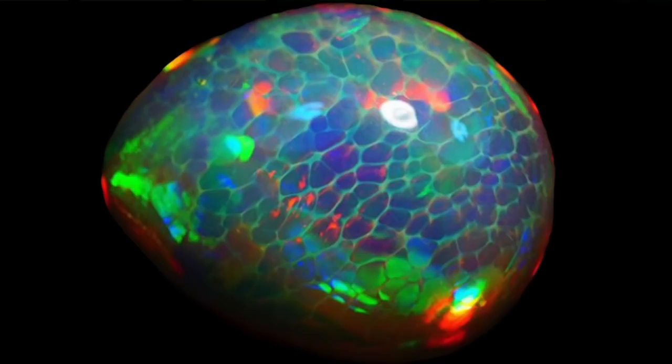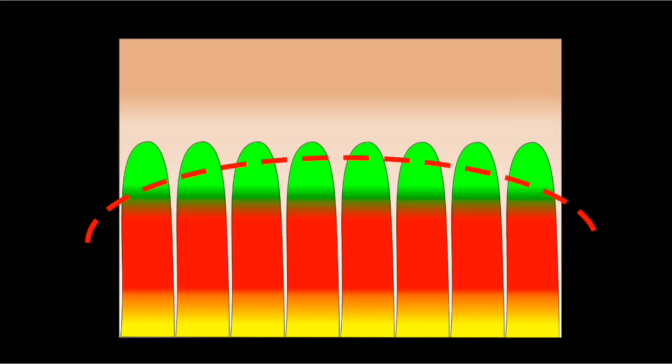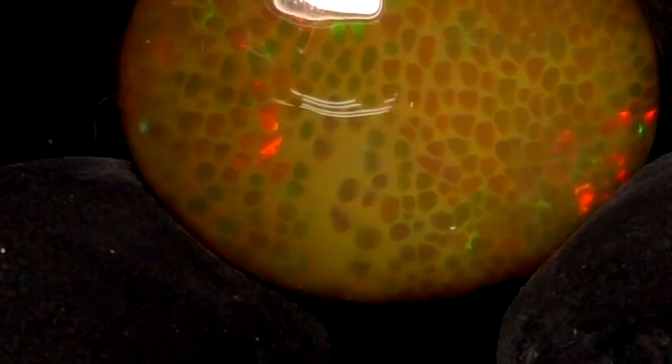When we cut opal, we make domes. We don't cut flat. So what happens when we make a dome? Well, what happens when you make a dome is the cells at the edges are bigger than the ones in the center. It's just the way it goes. You've gone deeper down, so the cells get bigger. Simple as that.